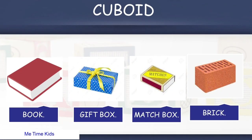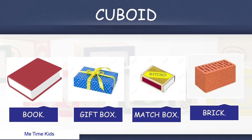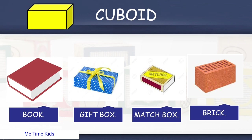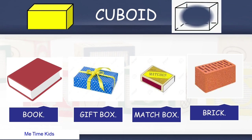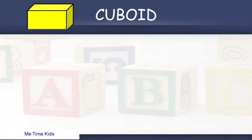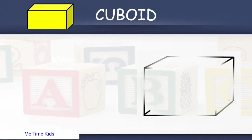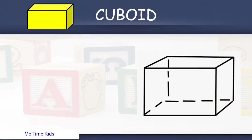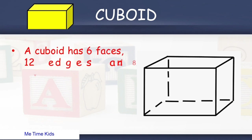First is cuboid. Some examples of cuboid are Book, Gift Box, Brick, and Match Box. Let's see its properties. A cuboid has 6 faces, 12 edges and 8 vertices.